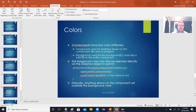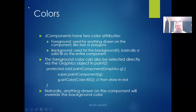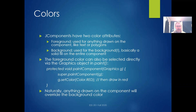Colors: all JComponents have two color attributes. The foreground — anything you draw on it with custom graphics like text or polygons — uses the set color attribute of the graphics brush. The background color uses the setBackground method for that component, which is basically a solid fill on the entire thing. You can also set the background directly through the graphics object in paintComponent using protected void paintComponent(Graphics g). Anything drawn with the foreground overrides the background — that's the whole point of the distinction.